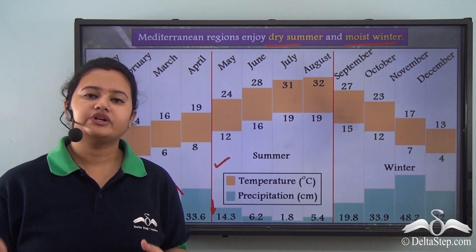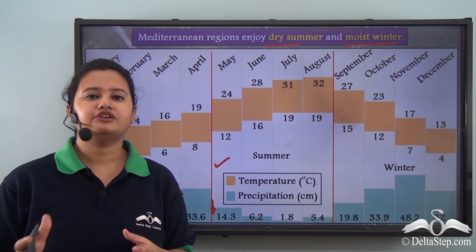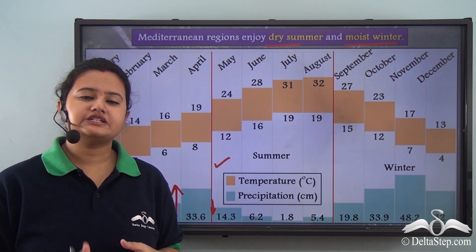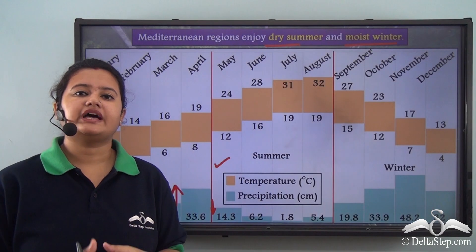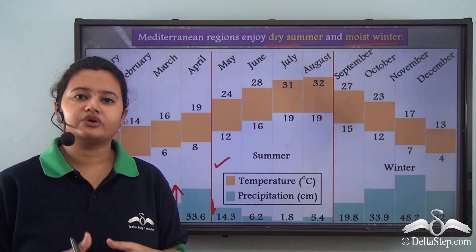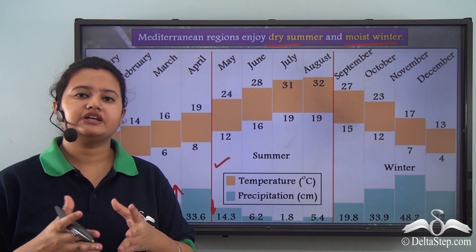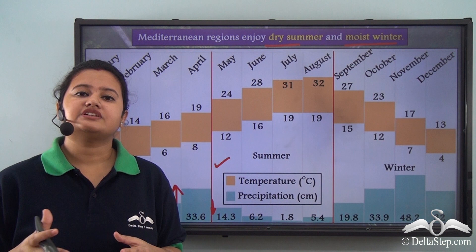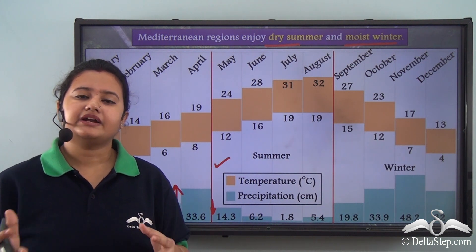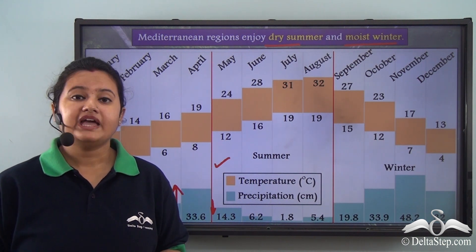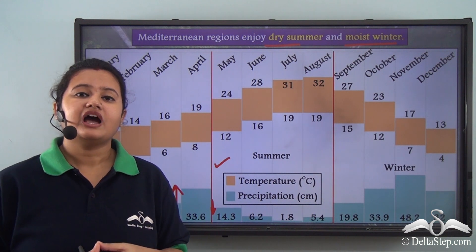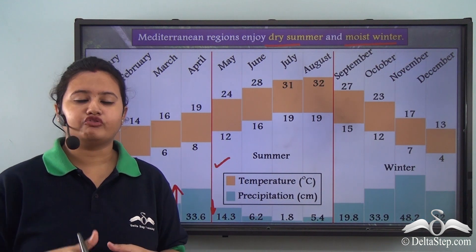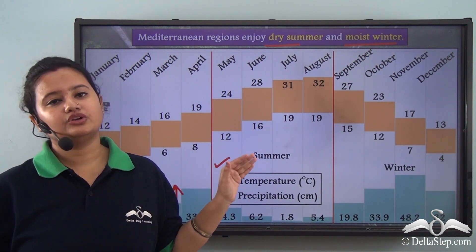This brings us to the end of today's discussion on Mediterranean region. Initially we discussed about the location of Mediterranean region — this biome is not only located around the Mediterranean Sea but also spreads to other continents of the world. We then discussed in detail about the climatic conditions of this biome. In our next video, we will see how these climatic conditions influence the vegetation and lifestyle of people living in this particular biome.